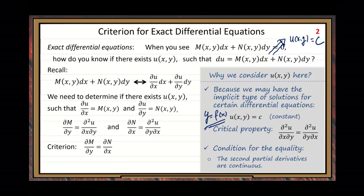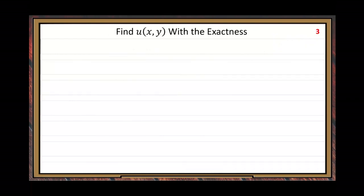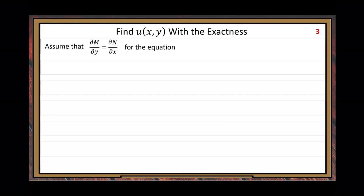We're halfway through our method. The remaining half: the next question is how to find the U function. Assume the criteria is satisfied — how to find that U function? We take an integral this time. Assume we have this equality for the given equation in differential form.